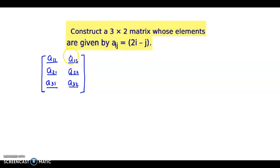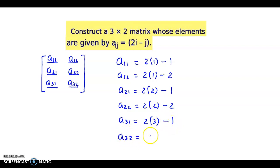Let's find a11 first: 2 into 1 minus 1. For a12, 2 into 1 minus 2. A21 will be 2 into 2 minus 1. A22 will be 2 into 2 minus 2. A31 will be 2 into 3 minus 1, and a32 will be 2 into 3 minus 2. Let us evaluate these values.